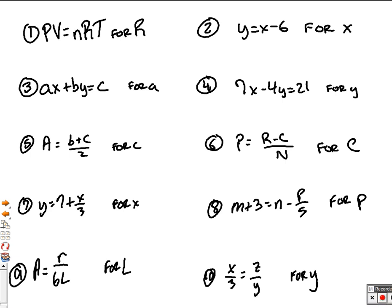So here's your review for the test coming up on literal equations, solving for each variable, and this one for number one. Solving for R means that we need to look on this side with R as N and T, both connected by multiplication. So to undo multiplication, we need to divide by N and T. What we do to one side, you do to the other. That's what cancels those out, and you get the answer of PV.